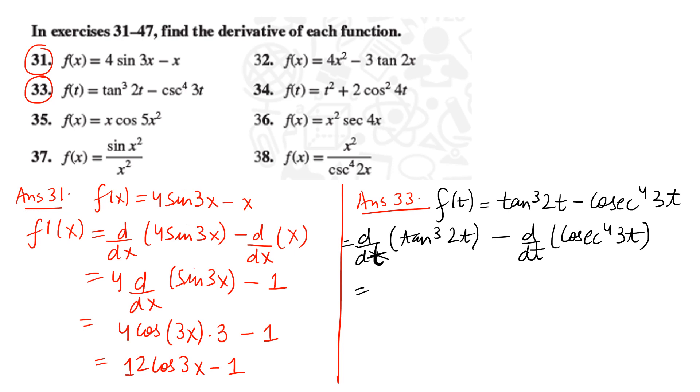d by dt of cosecant⁴(3t). d by dt means rate of change—we are changing this quantity with respect to t. Now for tan³(2t), first is the outer function. We are going to apply chain rule here. We will also apply power rule because there are powers, and definitely because you have tan and cosecant, you will apply the trigonometric ratio. As you see, in this question we are applying so many concepts.